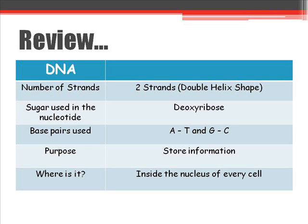First let's review what you already know about DNA. There are five things you already know. You know the number of strands — DNA is double stranded, that means there's a double helix. The sugar used is deoxyribose. Base pairs are A, T, G, and C, and its purpose is to store information. You can find DNA inside the nucleus of every cell.